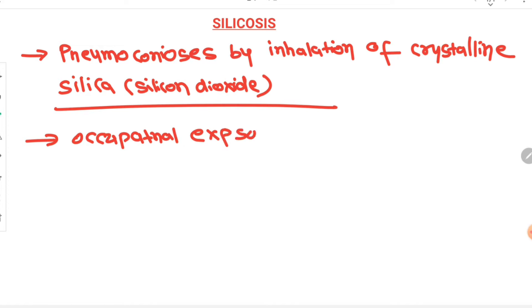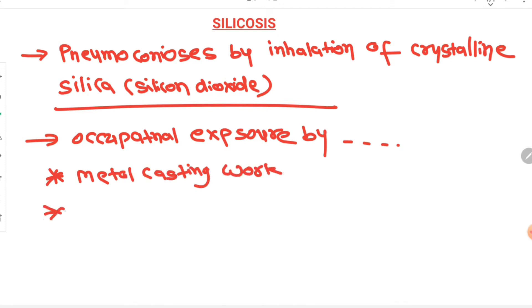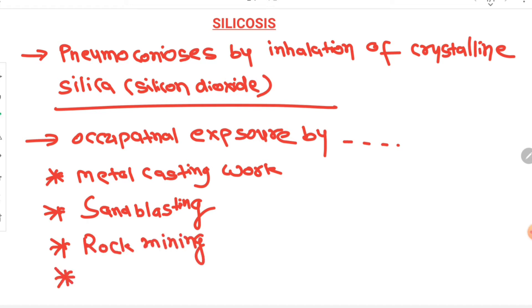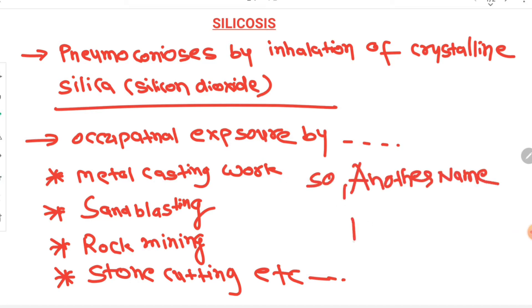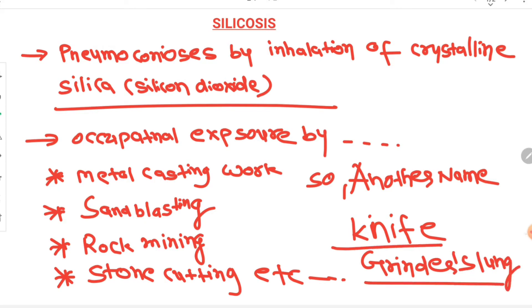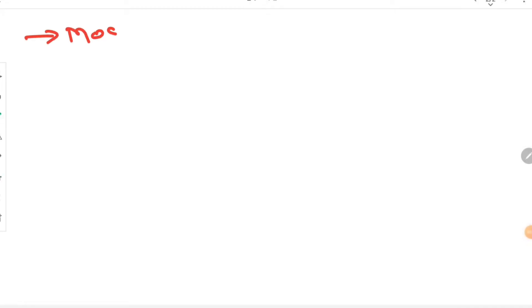This is the most common variety of pneumoconiosis. Occupational exposure of silica occurs by metal casting work, sand blasting, rock mining, and stone cutting — workers engaged in these activities are more prone to inhalation of silica particles. That is why another name of silicosis is 'knife grinder's lung.'